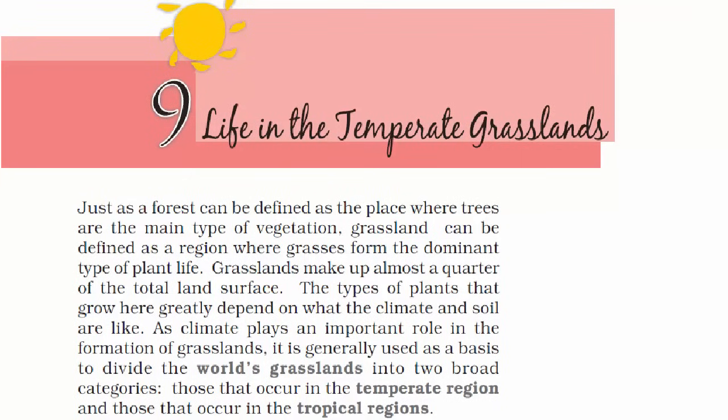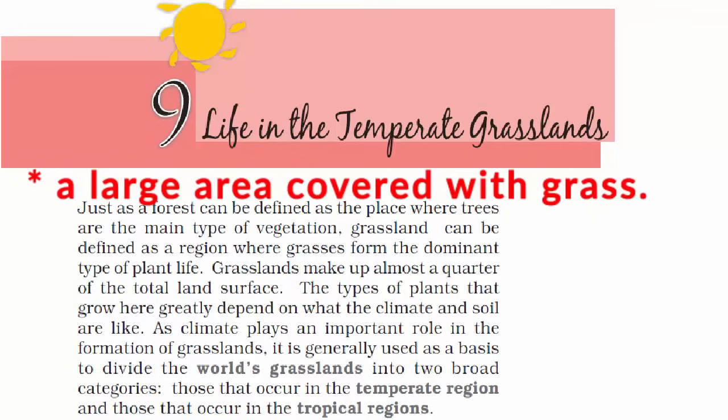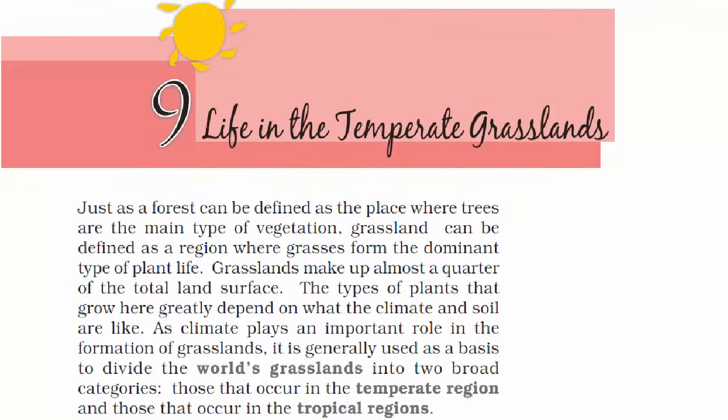What is a grassland? A large open area of country covered with grass, especially one used for grazing. Animals can graze on it. Grasslands are only found in temperate regions and tropical regions.